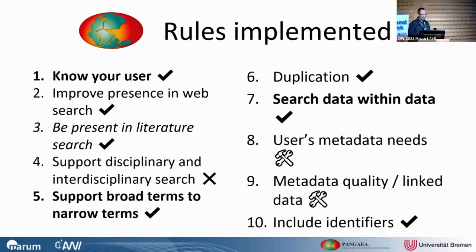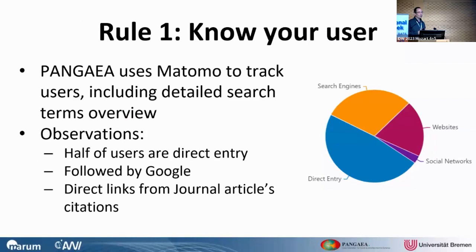The first is 'know your user,' because we have measured what our users are doing. Pangea tracks users — now using Matomo, previously Google Analytics. What we found at Pangea is a bit different from the paper: half of our users at Pangea enter as a direct entry — using the URL or bookmarks. This is followed by people coming directly through search engines like Google. The third largest source is journal article pages, where users click links in the reference list to the dataset.